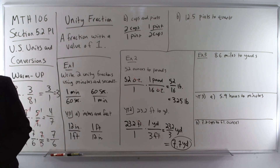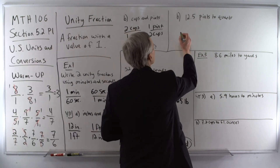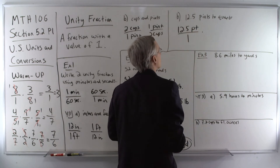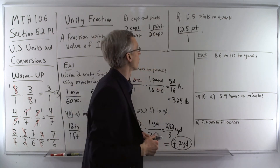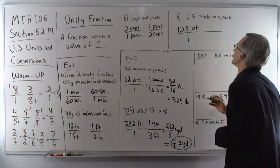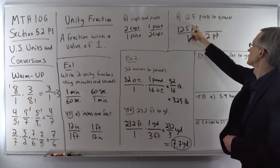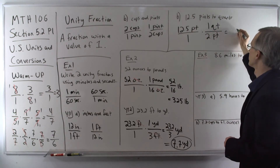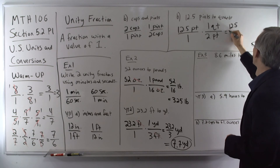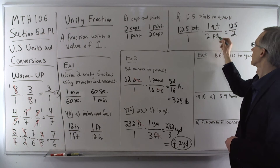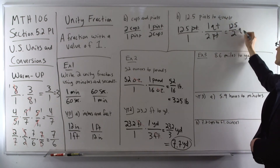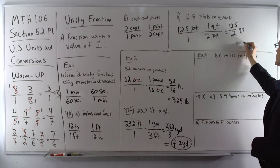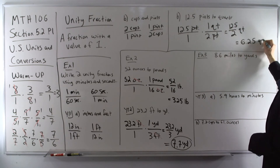Part B: convert pints to quarts. There are two pints in a quart, so the two pints go on the bottom and one quart goes on top. Multiply straight across: 12.5 times 1 on top, 1 times 2 is 2 on the bottom. The pints cancel, leaving units of quarts. Dividing that out gives us 6.25 quarts.